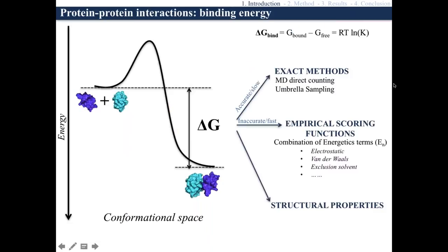The computational methods used so far to predict binding affinity can be grouped into three main families. First, we have exact methods, for example molecular dynamics approaches, which are very accurate because they try to sample the energetic and conformational landscape. But because of that, they can be very slow, and in the case of protein-protein complexes we are talking about very big systems, so these approaches might not be applicable on large scale. There have also been approaches within these exact methods to speed up calculation, such as umbrella sampling, but those are still not considered for large-scale prediction of binding affinities.